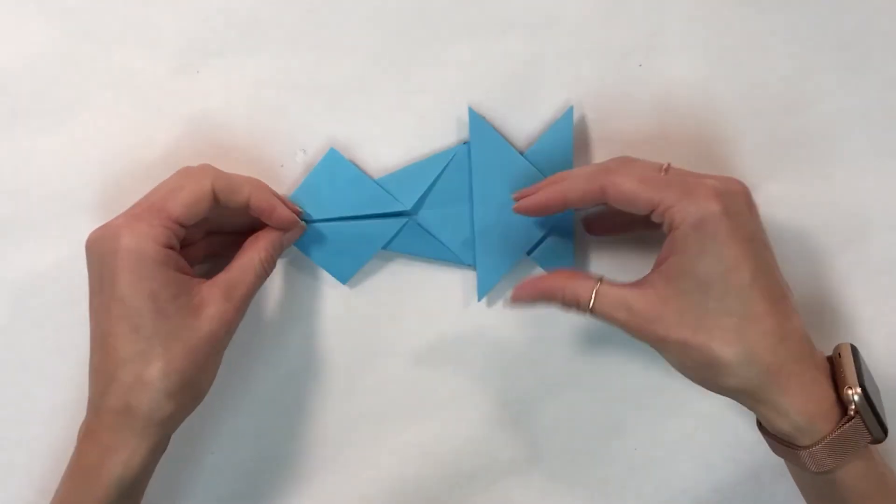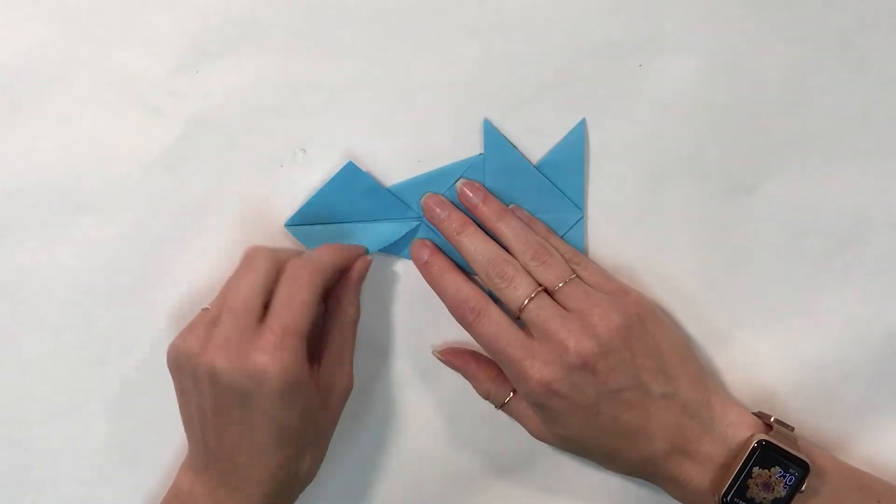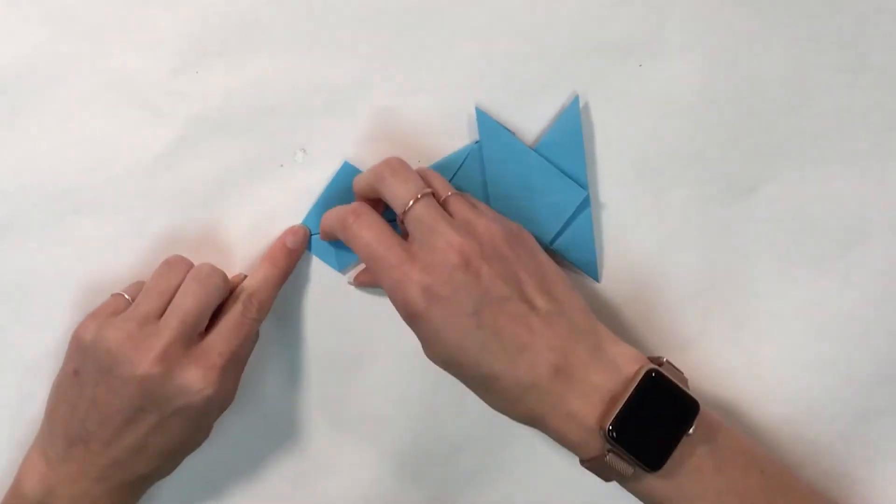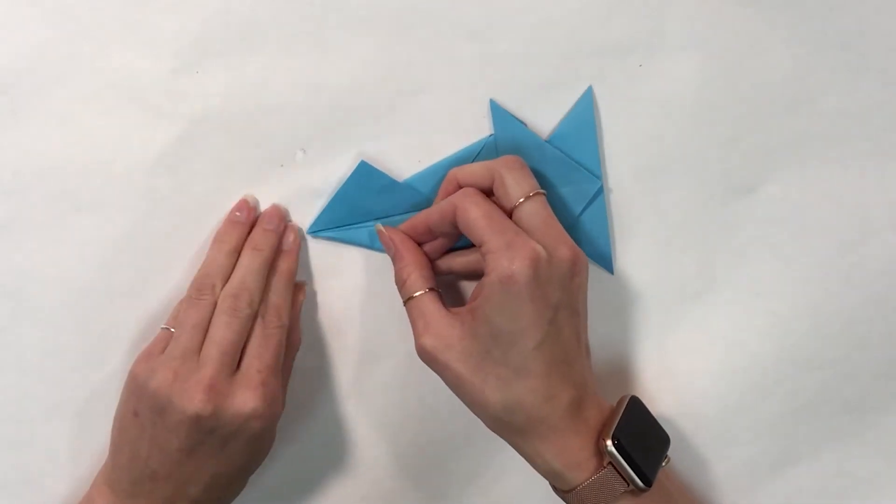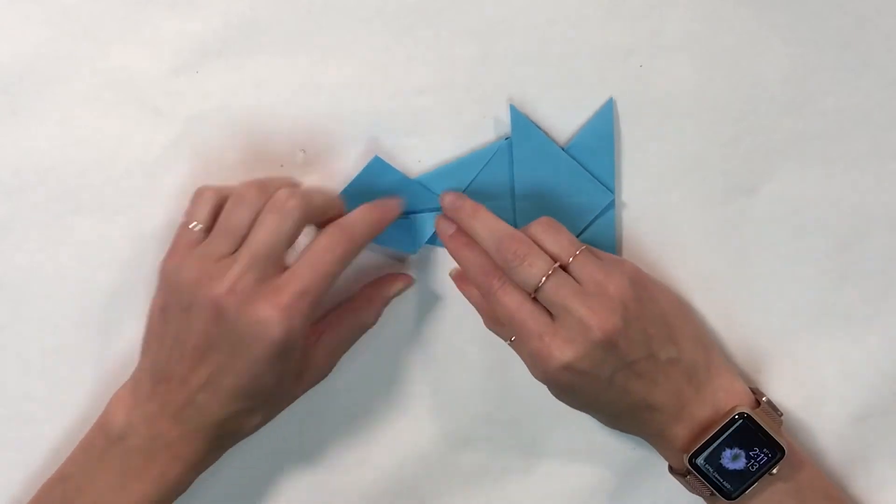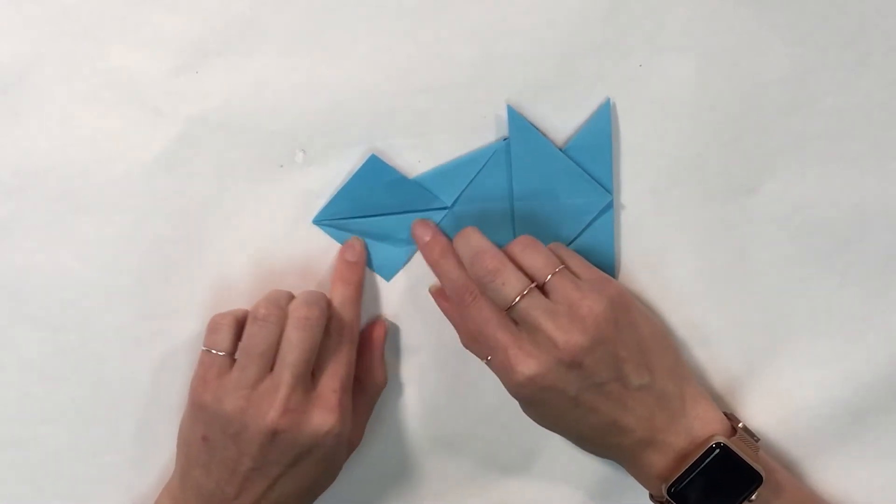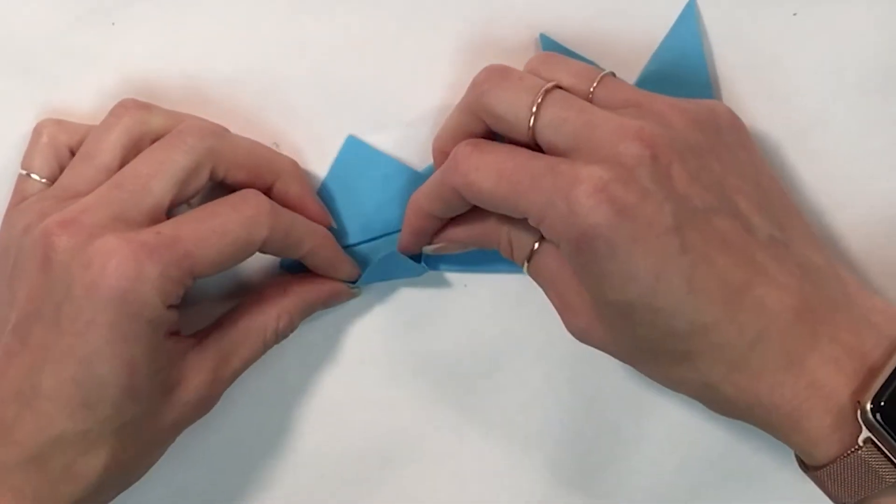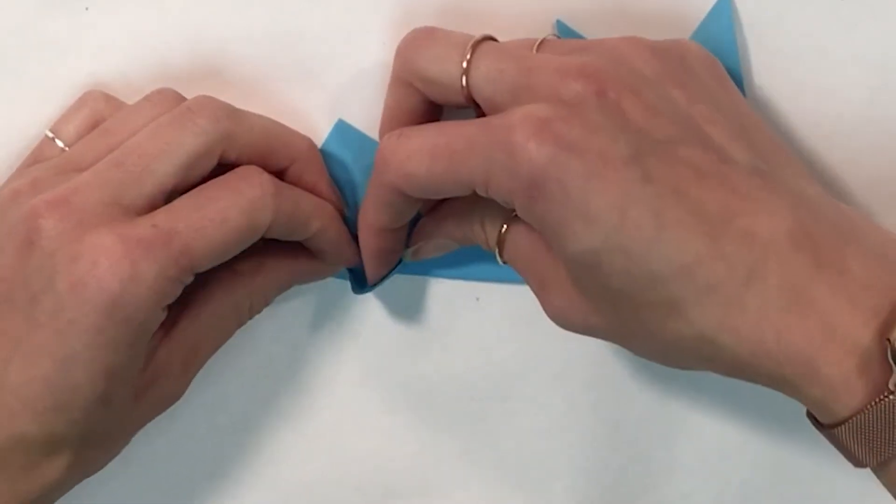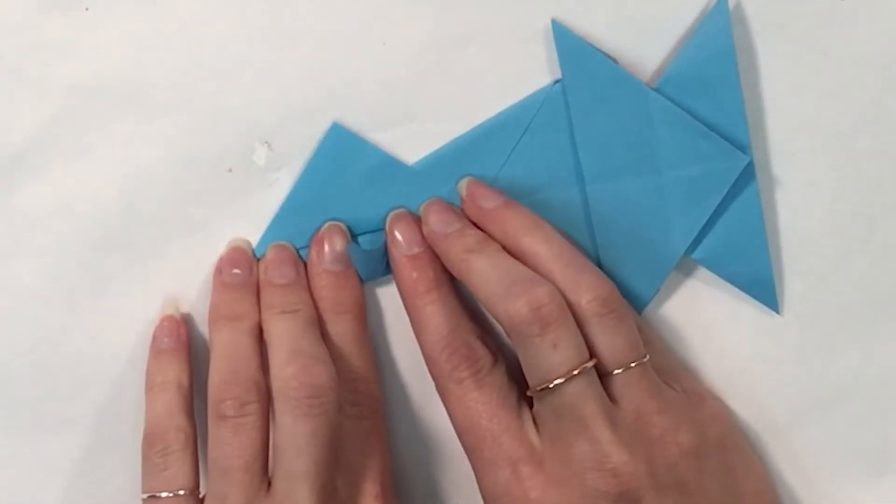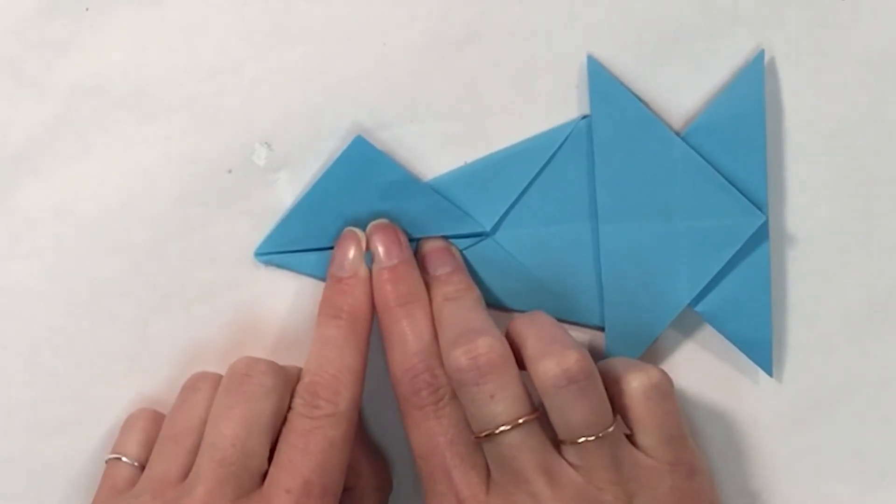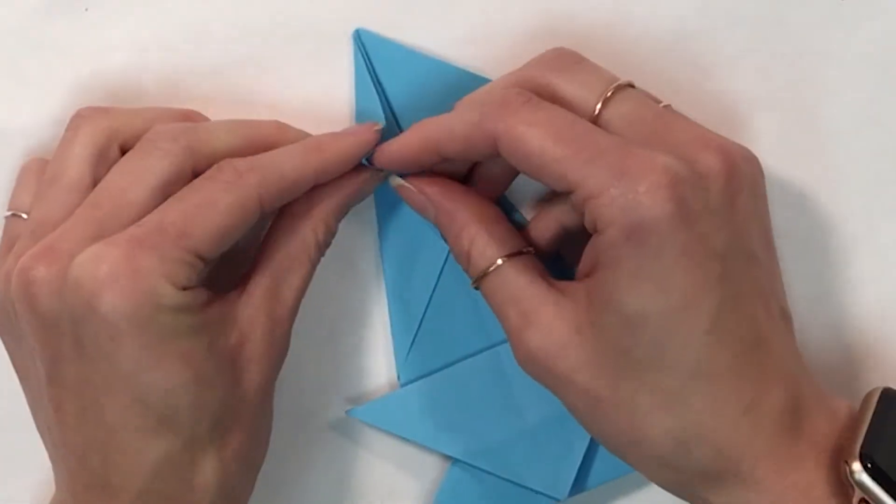Now I'm going to flip my paper over, and I'm going to fold both of my edges to the center line. I'm going to use these diagonals now to fold. And I'm going to then finesse the point of my paper to fold right at the point.